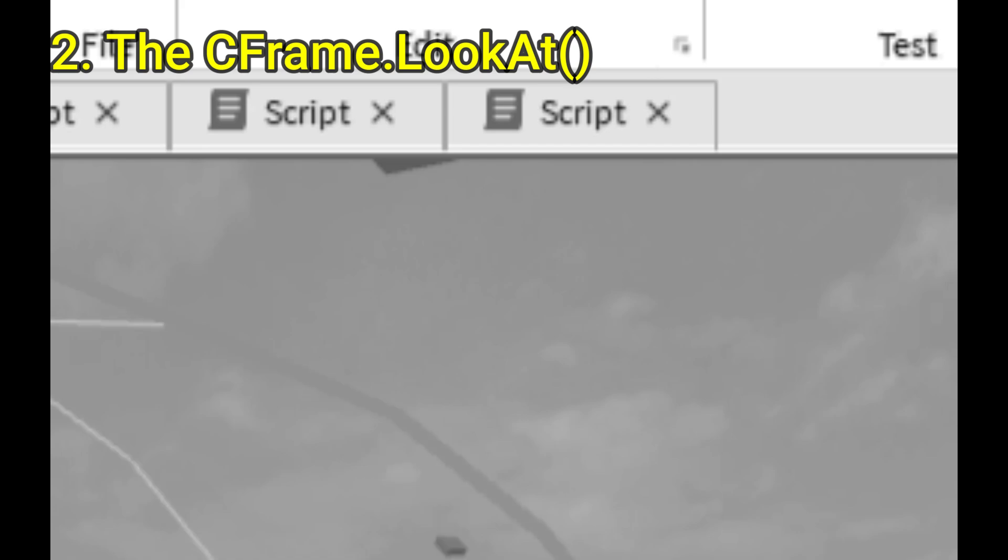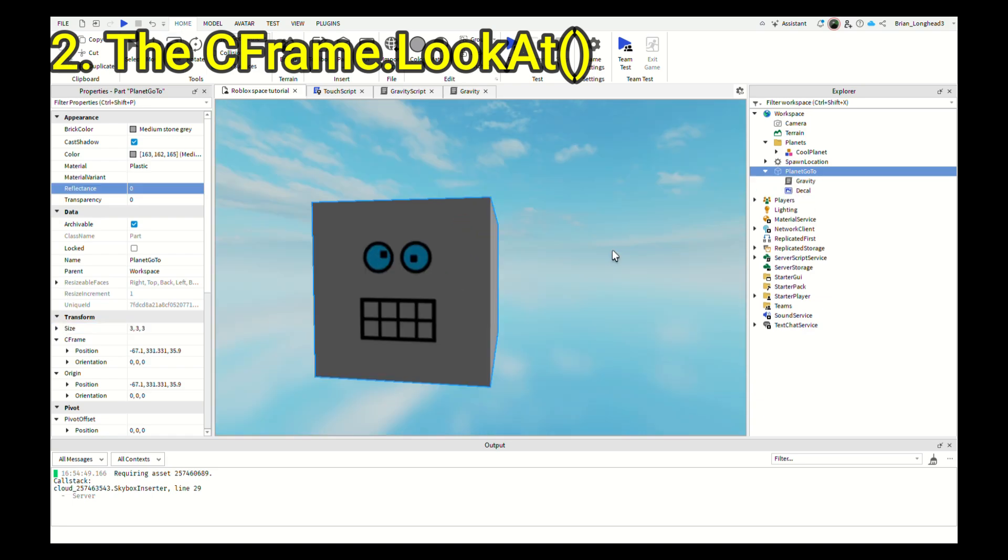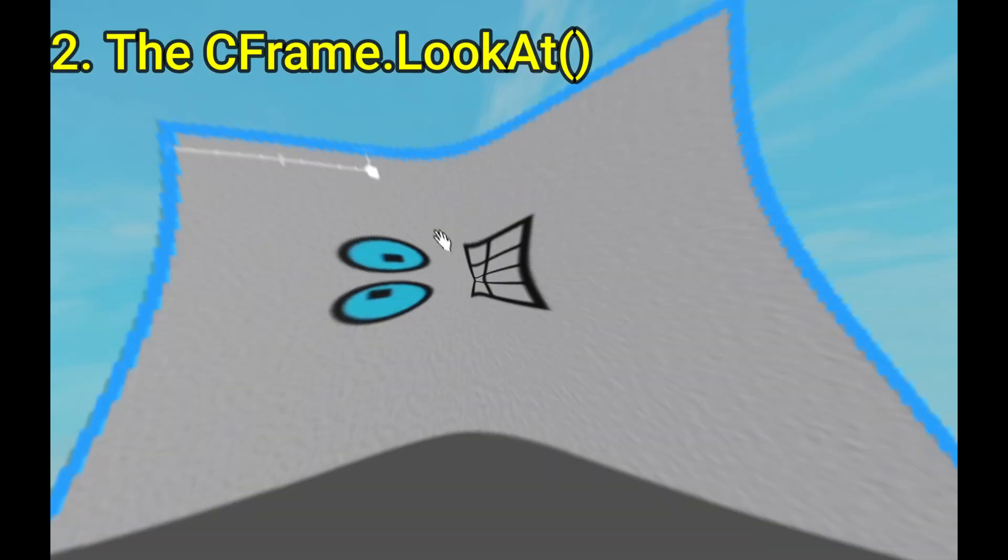Turns out it was that part on top of the planet. So I need to anchor the part after touch, and I also designed the part to look like a robot.